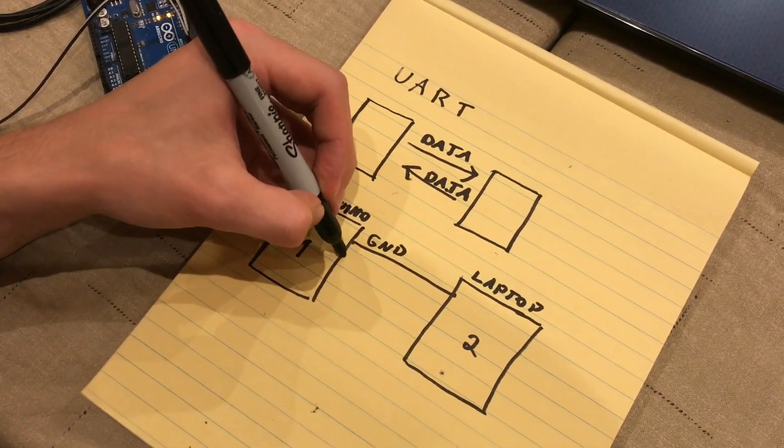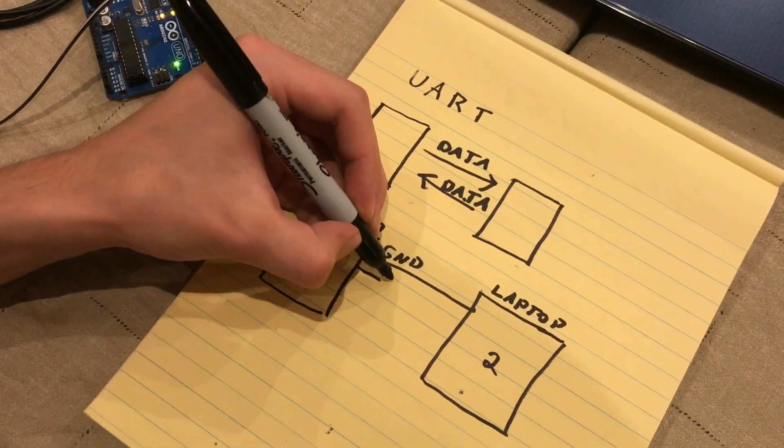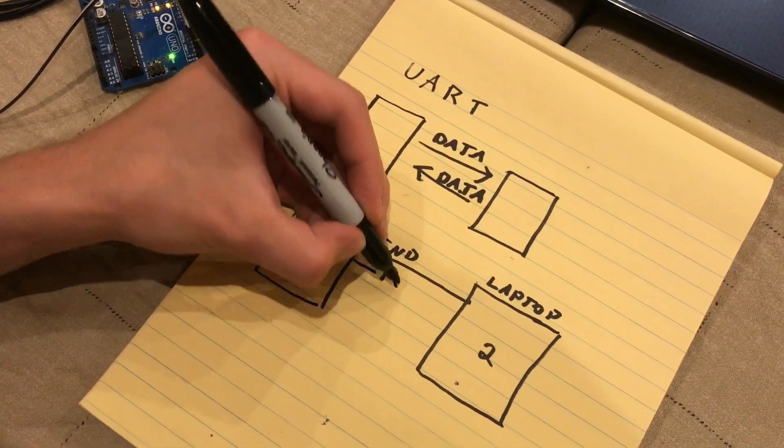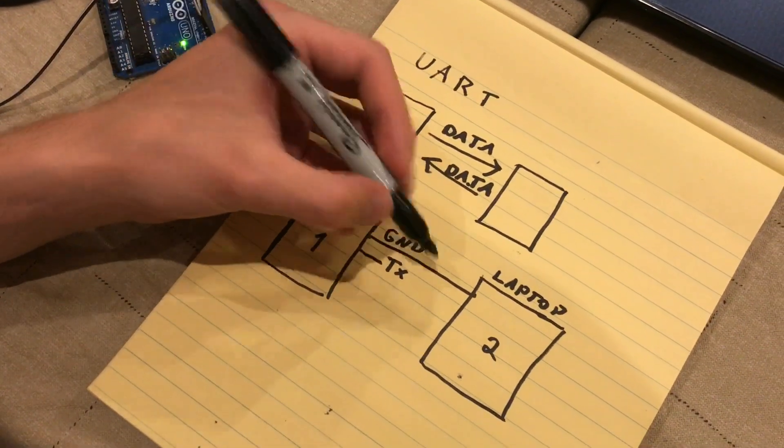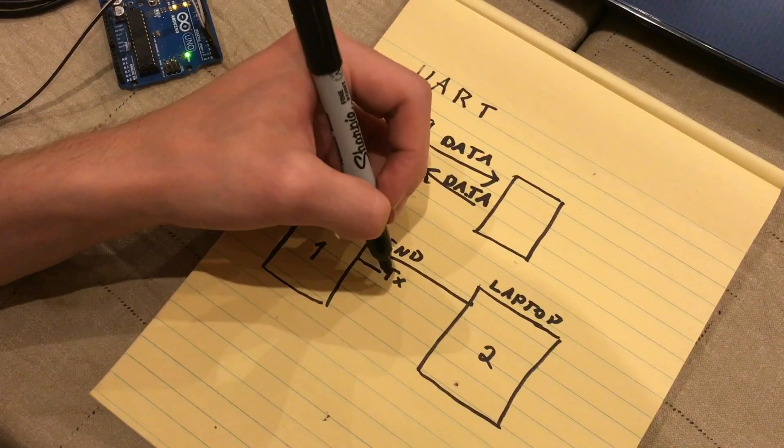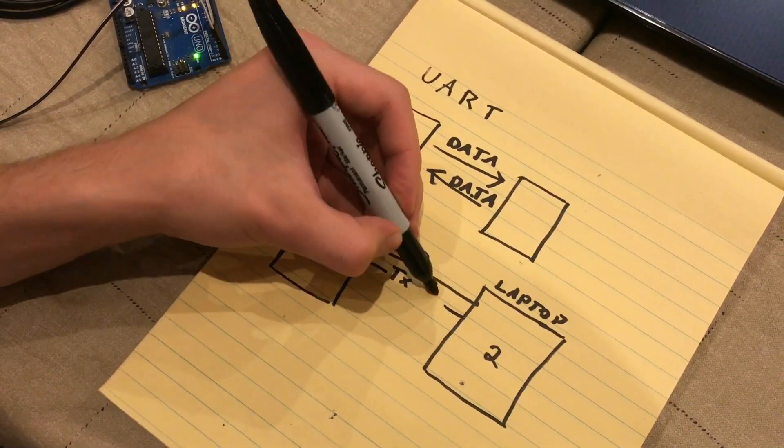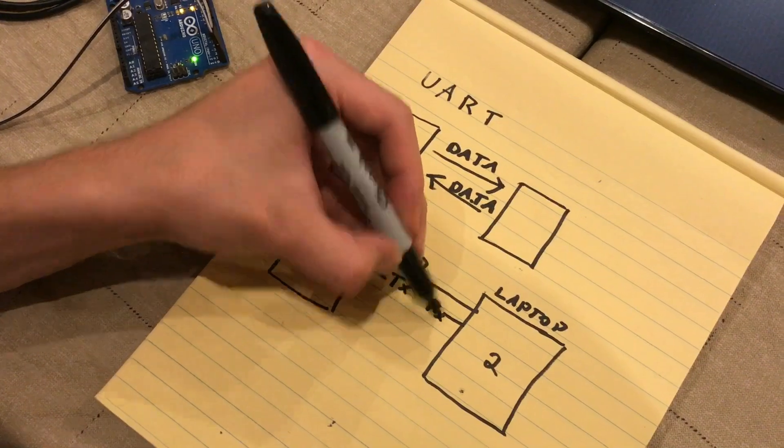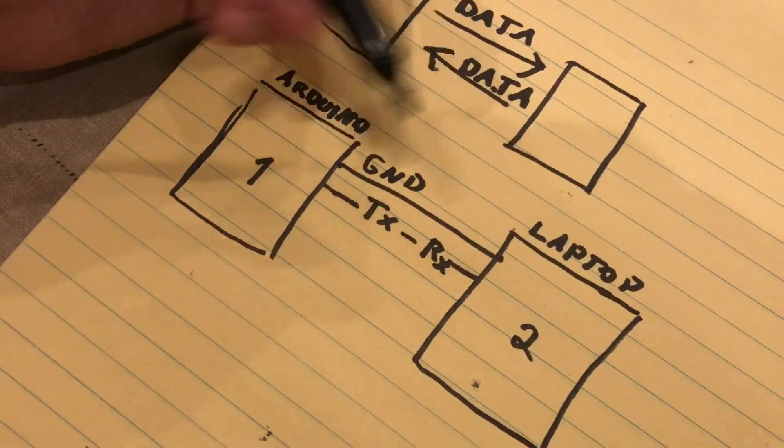The second one is TX, it's called TX, which is short for transmission. But it's actually not TX the whole way across, because on the laptop side, it's actually called RX, for receiving or reception. And they're connected together.